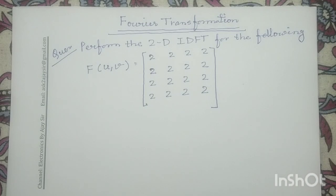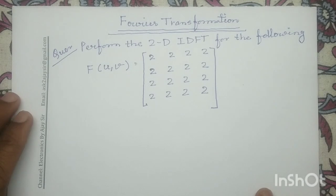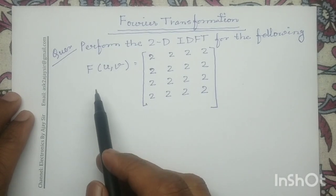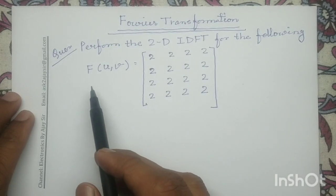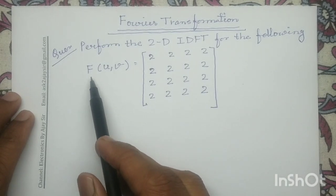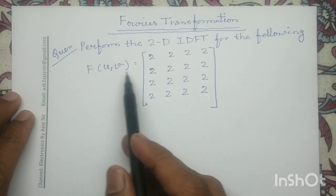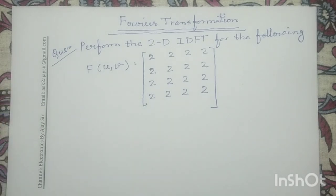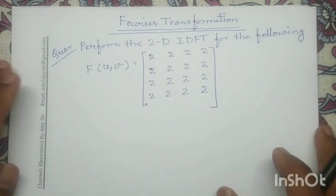Good morning all. Let us discuss a numerical question on two-dimensional inverse discrete Fourier transformation. In this question, the frequency domain representation in two-dimensional space, that is F(u,v), is given to us, and for this given input signal we have to perform the inverse discrete Fourier transformation.